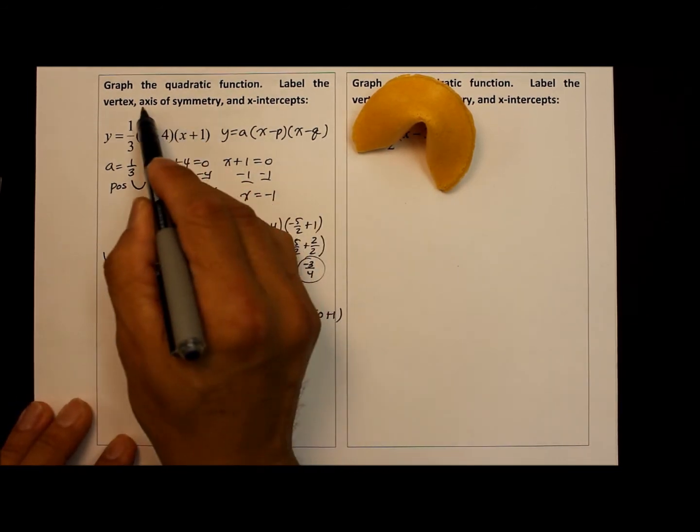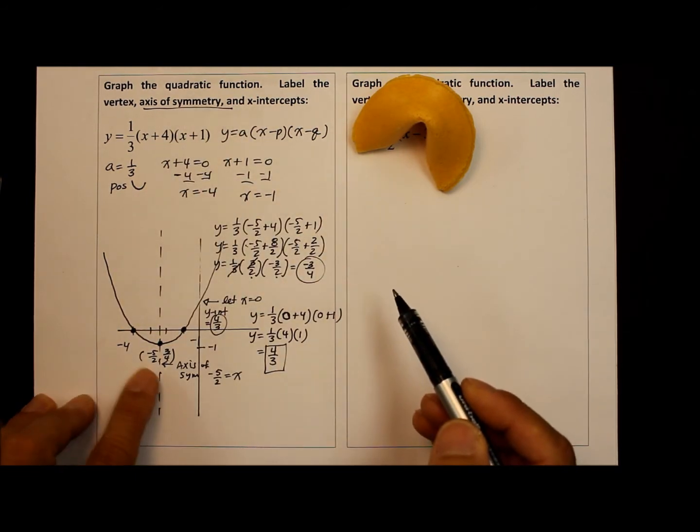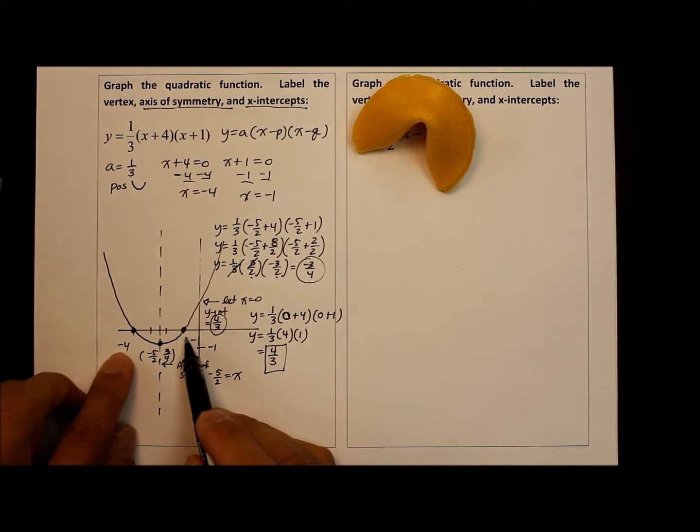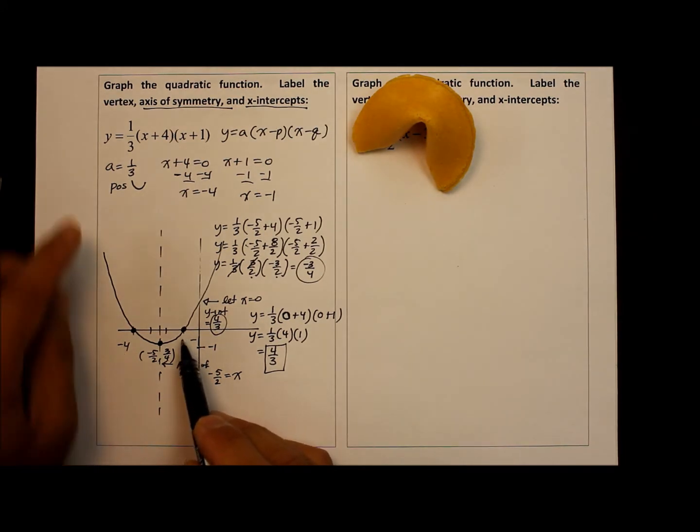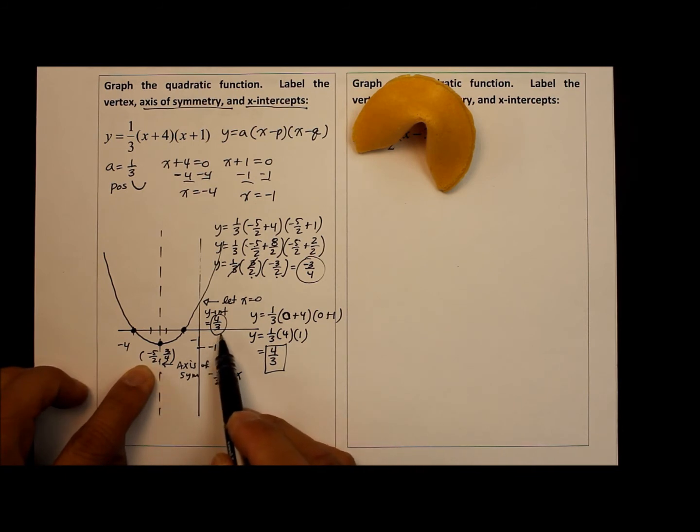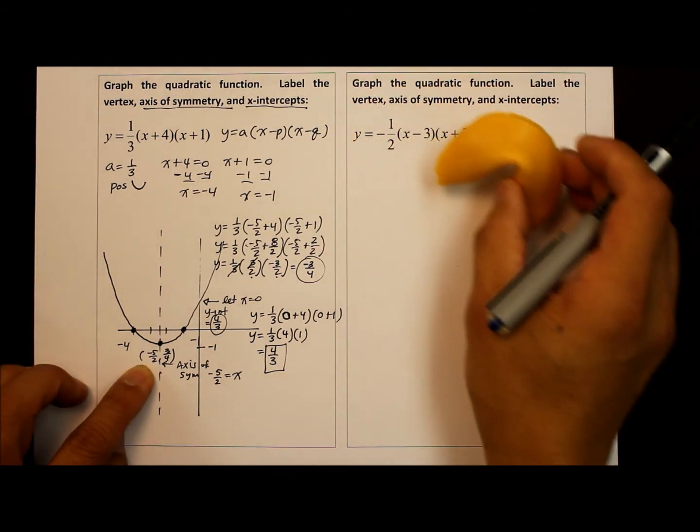Therefore, we have answered the axis of symmetry, negative five over two, x-intercepts, which is at negative four and negative one, we indicated the vertex, which is the coordinate right here, and we went further, even find the y-intercept. Now, why don't you do the second one?